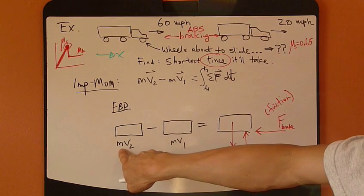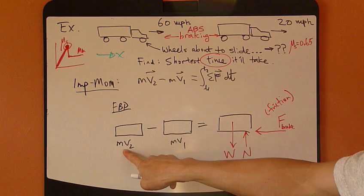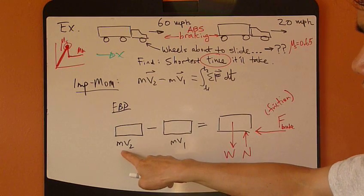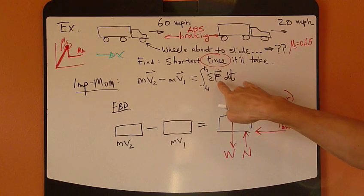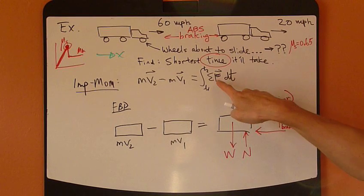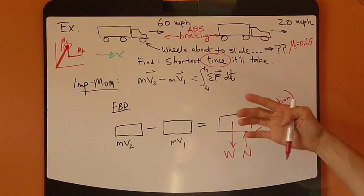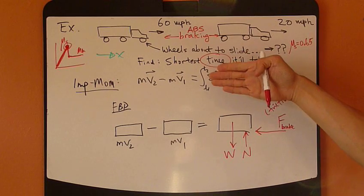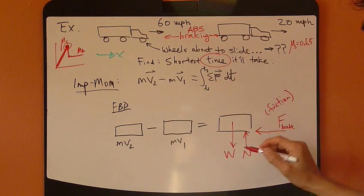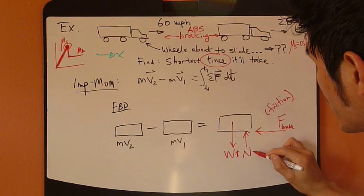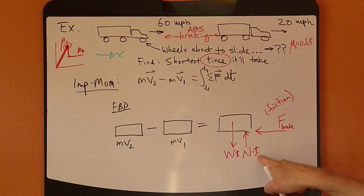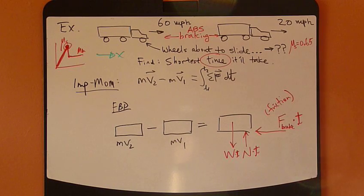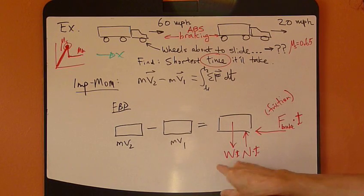Left-hand side, we have the mV term, the linear momentum term. This is the final linear momentum, initial linear momentum. Right-hand side I have impulse, force times time. In this case, just to reflect this equation which is force times time, add a little time here. So W times T, N times T, and then F_brake times T. Each of these terms is an impulse.